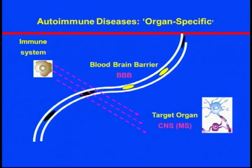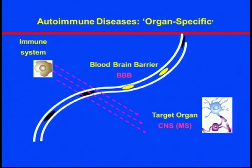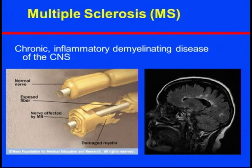The malfunction starts in the immune system. The process starts in the peripheral system and the immune cells get over-activated and cross the blood-brain barrier, eventually reaching the central nervous system — shown as the blue cells, which are your neurons and oligodendrocytes. Multiple sclerosis is a multifocal chronic demyelinating disease.